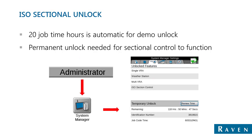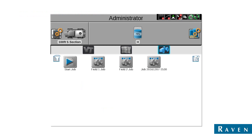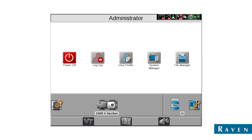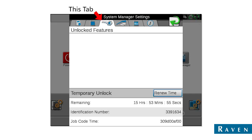The ISO sectional control unlock is needed for Viper 4s only. You automatically get 20 hours of trial time anytime you buy a new Hawkeye system or a new Viper 4, but a permanent unlock must be purchased through a Raven dealer. If you're operating the system and your booms do not turn off while in a job, the temporary time may have run out. If you get an alarm with an ISO sectional control warning, that's another indicator the 20 job hours have expired. To enter the code, press the administrator tab on the Viper 4, go to system manager, and the next screen shows unlocked features and the remaining temporary time.